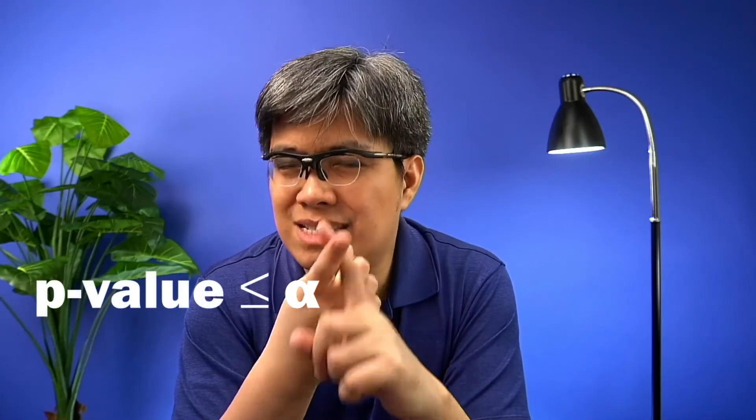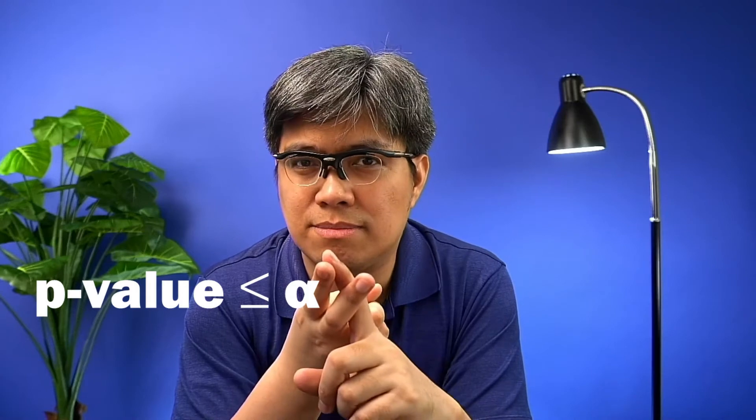Step four is determining the conclusion. To do that, you need two things: the p-value and the level of significance, which we already determined in steps two and three. There are two ways of solving for the conclusion, but the p-value approach is simpler. You simply compare the p-value to your level of significance. If the p-value is less than or equal to your level of significance, you reject the null hypothesis.